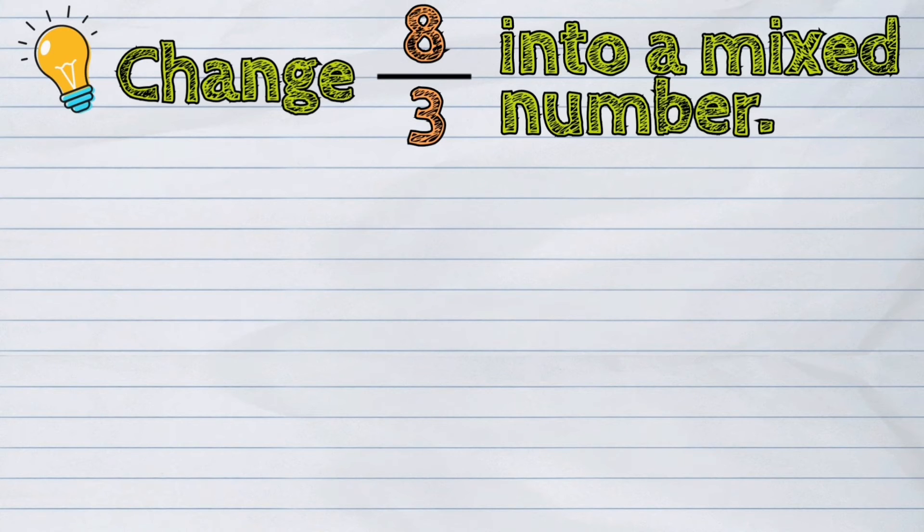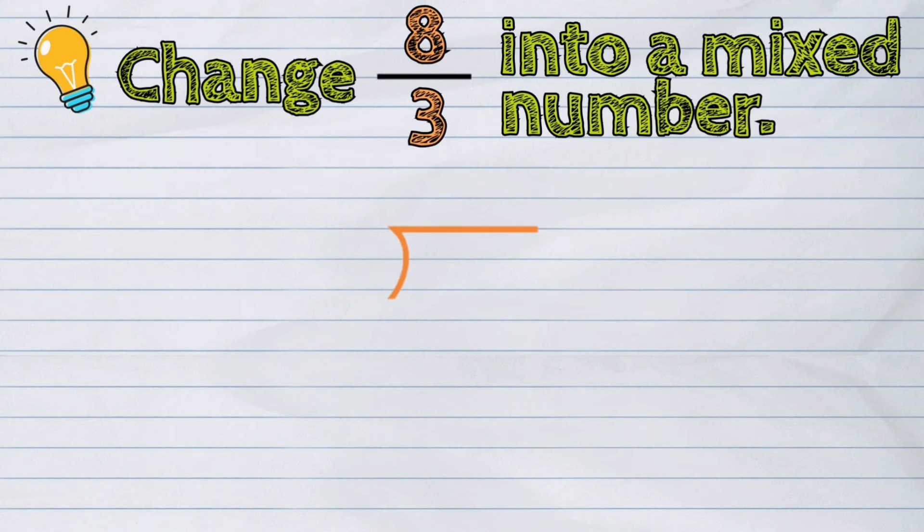Let us study another example. For example, change 8 thirds into a mixed number. We will do the same process. Divide 8 by 3.